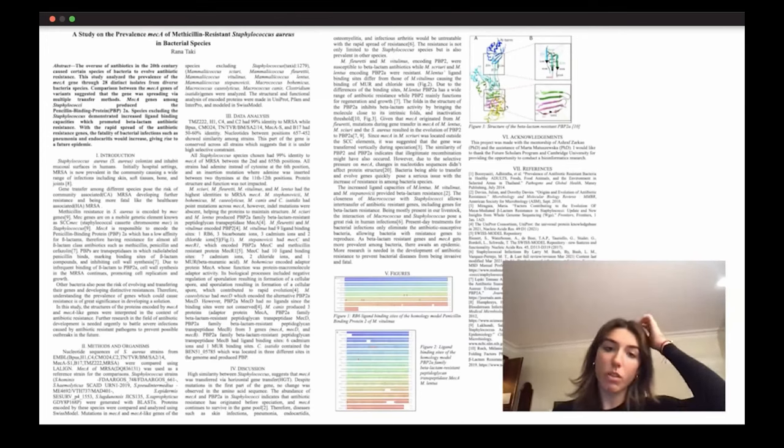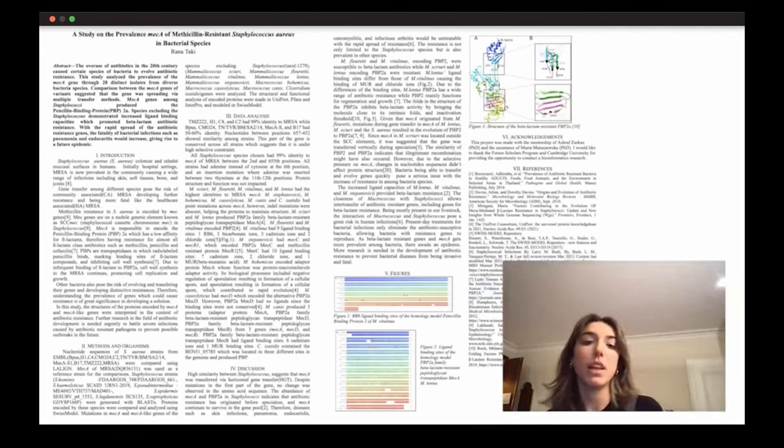The folds in the structure of PBP2A inhibit beta-lactam activity by bringing the molecule close to its intrinsic folding and inactivation threshold. Given that mecA originated from M. fleuretti, mutations during gene transfer were transferred vertically during speciation. The similarity of PBP2A and PBP2 indicates that illegitimate recombination might have also occurred. However, due to the selective pressure on mecA, changes in the nucleotide sequences didn't affect protein structure.